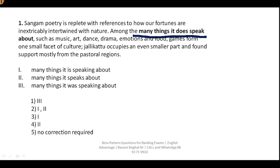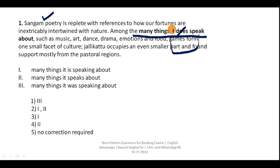In Question 1, we are talking about Sangam poetry. The phrase is 'many things it does speak.' This is an affirmative pattern, not a question pattern, so we do not use 'does' here. 'Does' is inappropriate here. If you remove 'does,' the word 'speak' will be associated with the singular subject 'it.' Since 'it' is singular, you have to say 'it speaks about.' So 'many things it speaks about' is the correct answer.